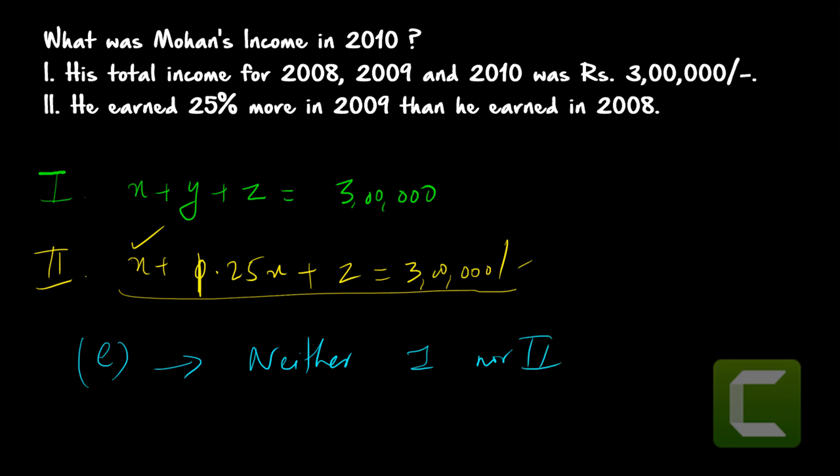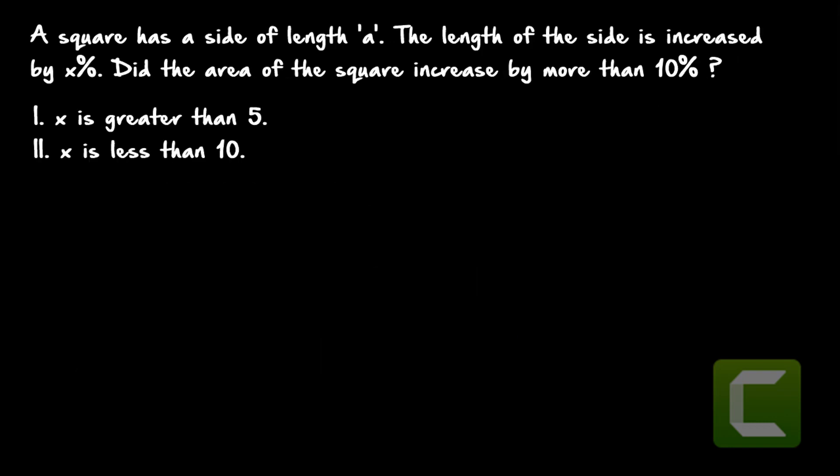Question number 2: a square has a side of length a. The length of the side is increased by x%. Did the area of the square increase by more than 10%? Two statements are given: statement one is x is greater than 5, and statement two is x is less than 10. We need to determine whether the area increases by more than 10%.